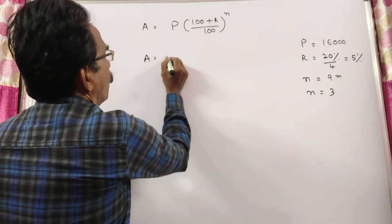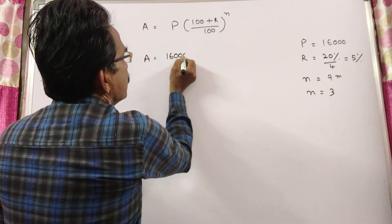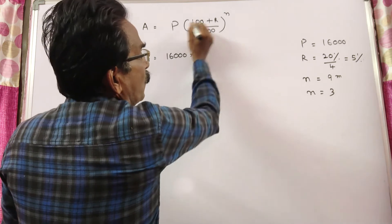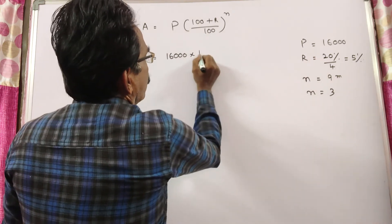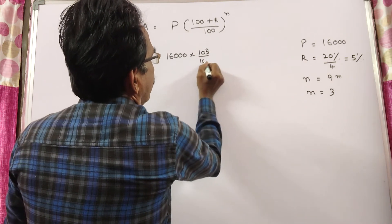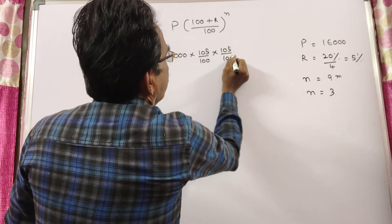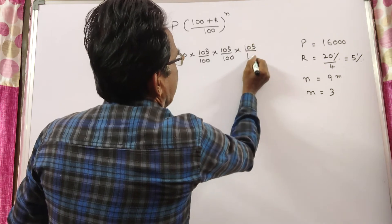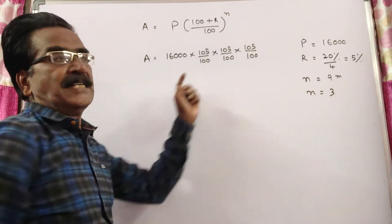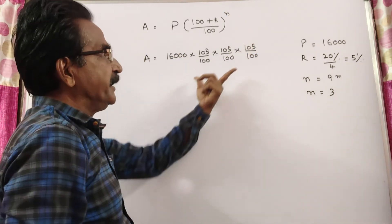N must be taken as 3 in this formula. So, now let us find the compound interest amount. 16,000 into 100 plus 5 by 100. 105 by 100 into 105 by 100 into 105 by 100. N is equal to 3, and hence I am putting 3 times.